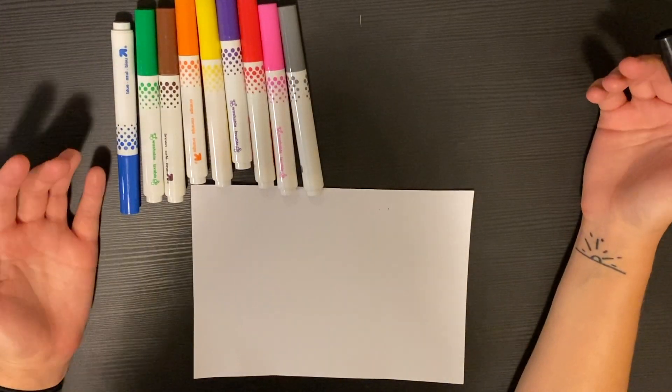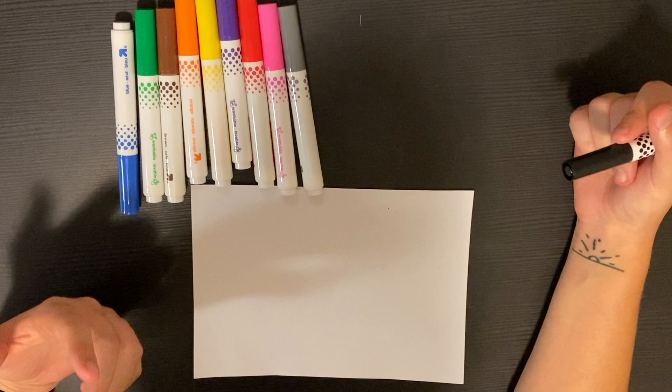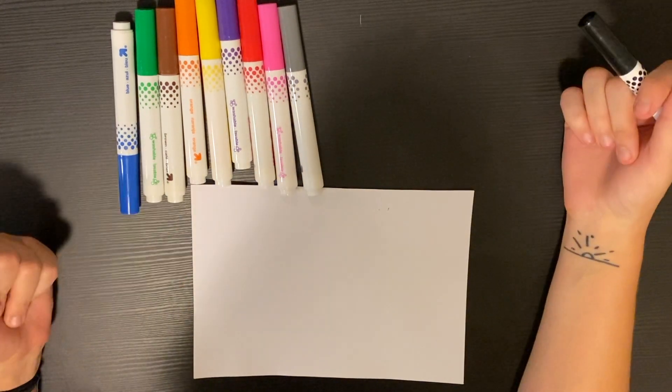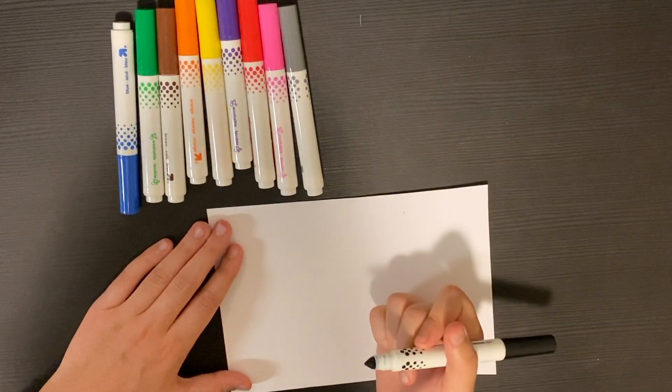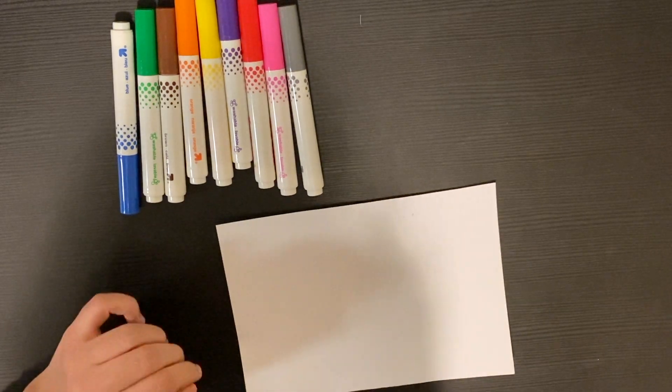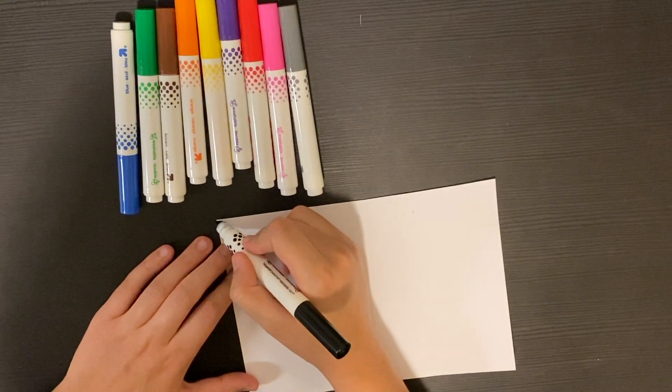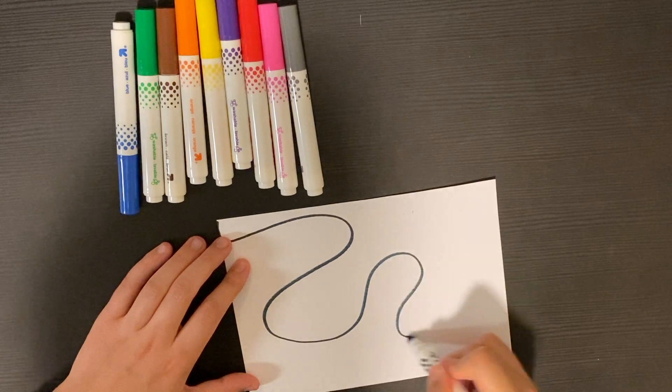So I've got this quick, easy Zentangle art project for you. All you need is a piece of paper and some markers. Alrighty, so step one is we're going to take a black marker and we are going to scribble all over our paper.